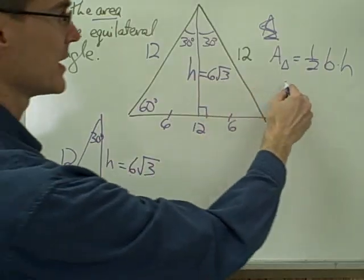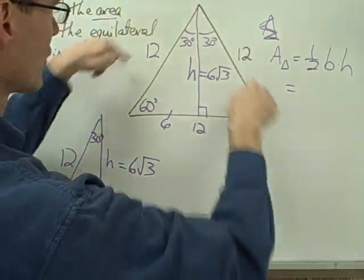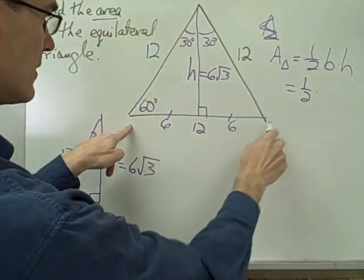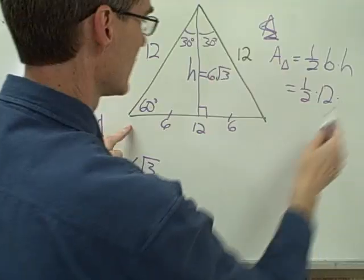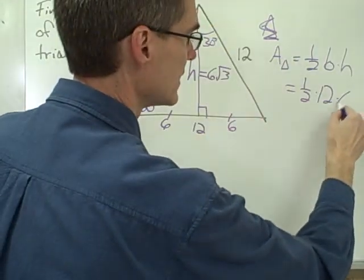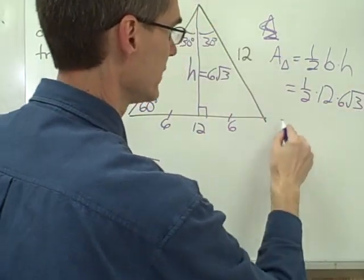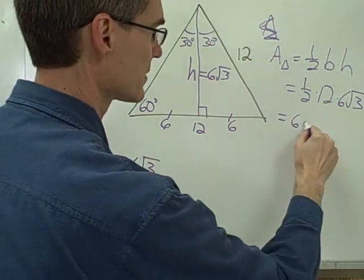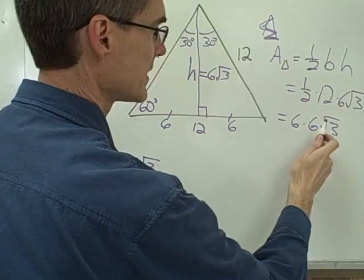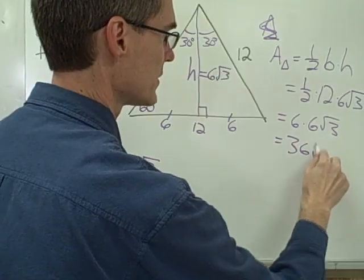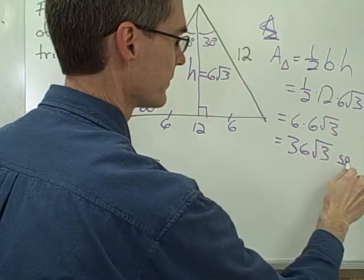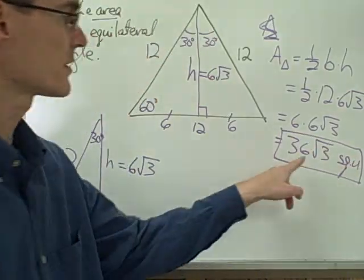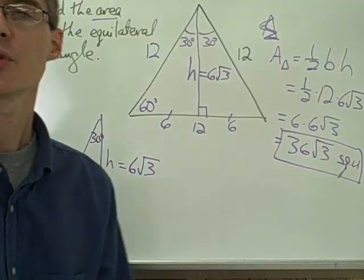Now I can calculate the area. The area of this equilateral triangle is one-half times the base of 12 times the height of 6 radical 3. One-half times 12 gives me 6, and 6 times 6 radical 3 gives me 36 radical 3. So the area of this equilateral triangle is 36 times the square root of 3 square units.